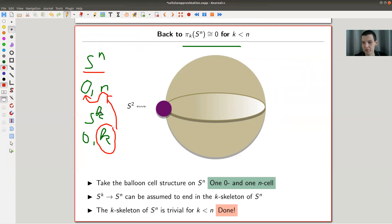So it definitely misses a point. It just ends in the corresponding zero skeleton. So we can really assume, up to homotopy, that my map ends in the k-skeleton of S^n, but the k-skeleton is trivial for S^n. And this is this missing point picture, and then pulling it open. And yeah, we're done.